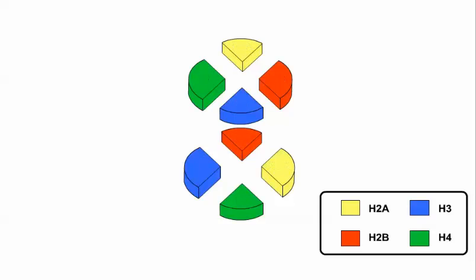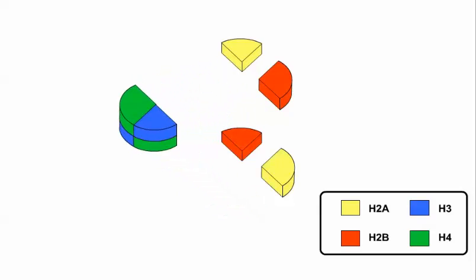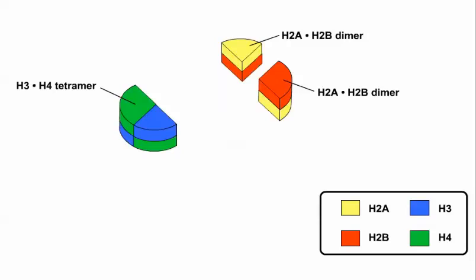This histone core is assembled from histone protein subassemblies. The H3 and H4 proteins form a tetramer subassembly. Two H2A-H2B dimers complete the histone core.